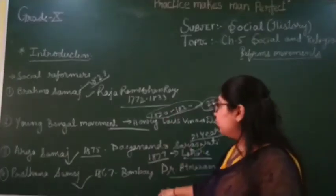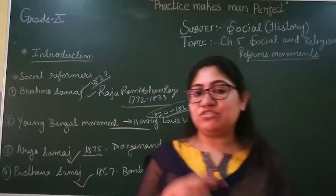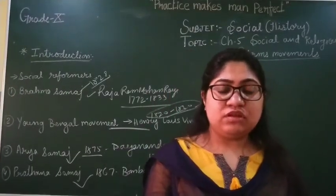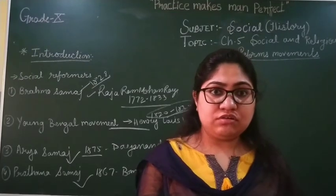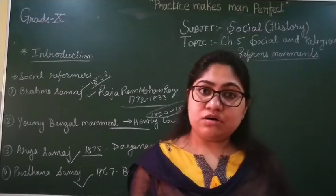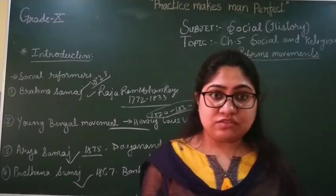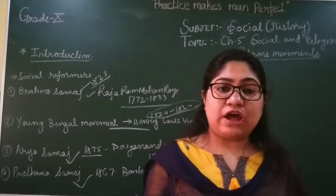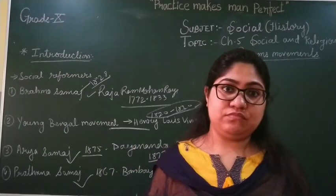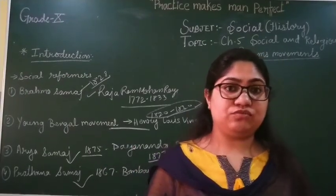According to this, the main problems of society were discrimination, child marriage, widows' issues, opposition to widow remarriage, and the sati system. Those kinds of things were common to all movements. So today I will end the lesson here — thank you.